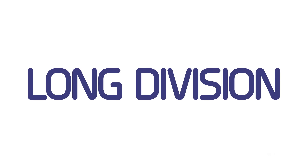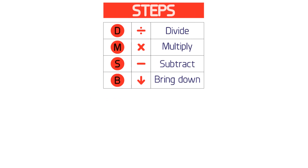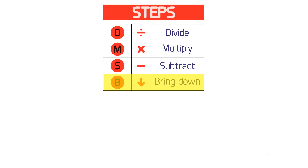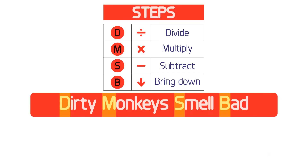Long division is a step-by-step method for dividing multi-digit numbers. It involves four basic steps: divide, multiply, subtract, and bring down — then repeat the process. Use the acronym DMSB, which stands for Divide, Multiply, Subtract, and Bring Down. An easy way to remember this is with a mnemonic like 'dirty monkeys smell bad.'